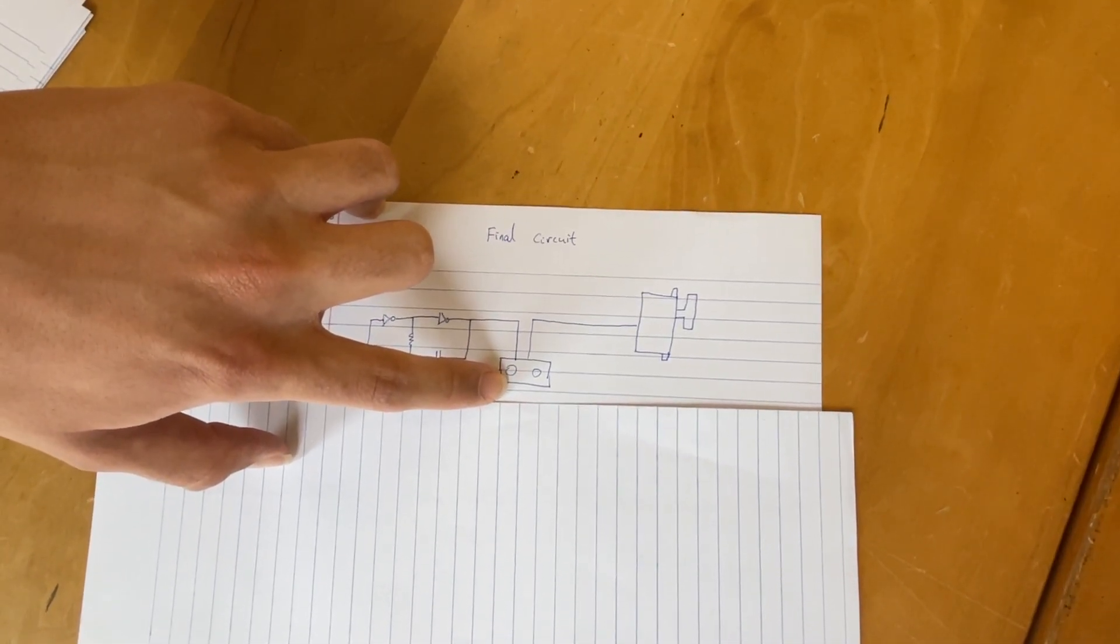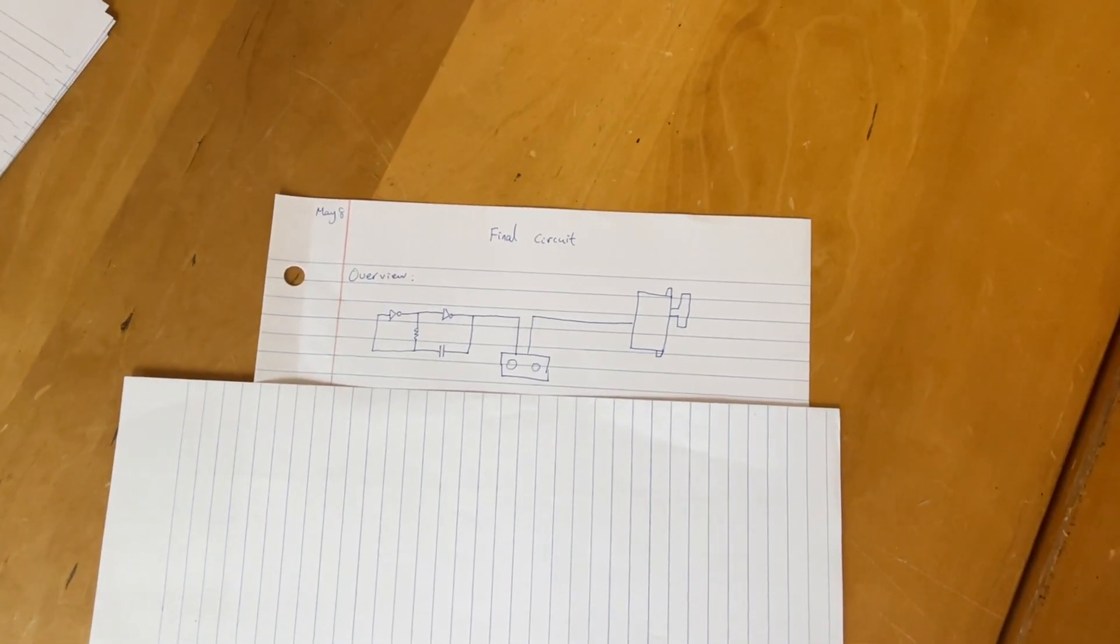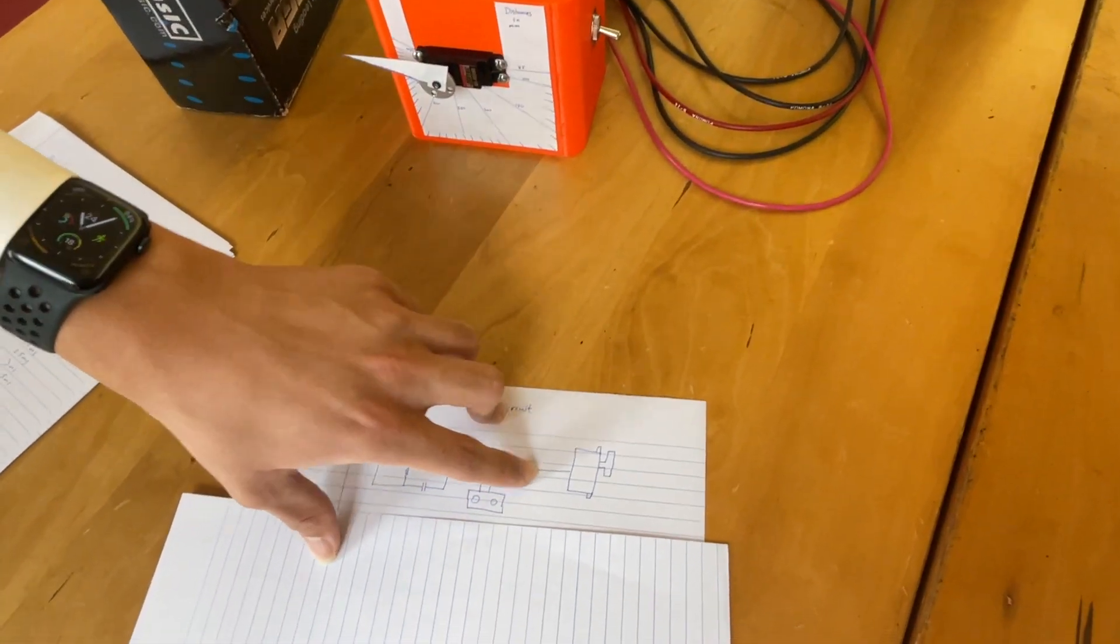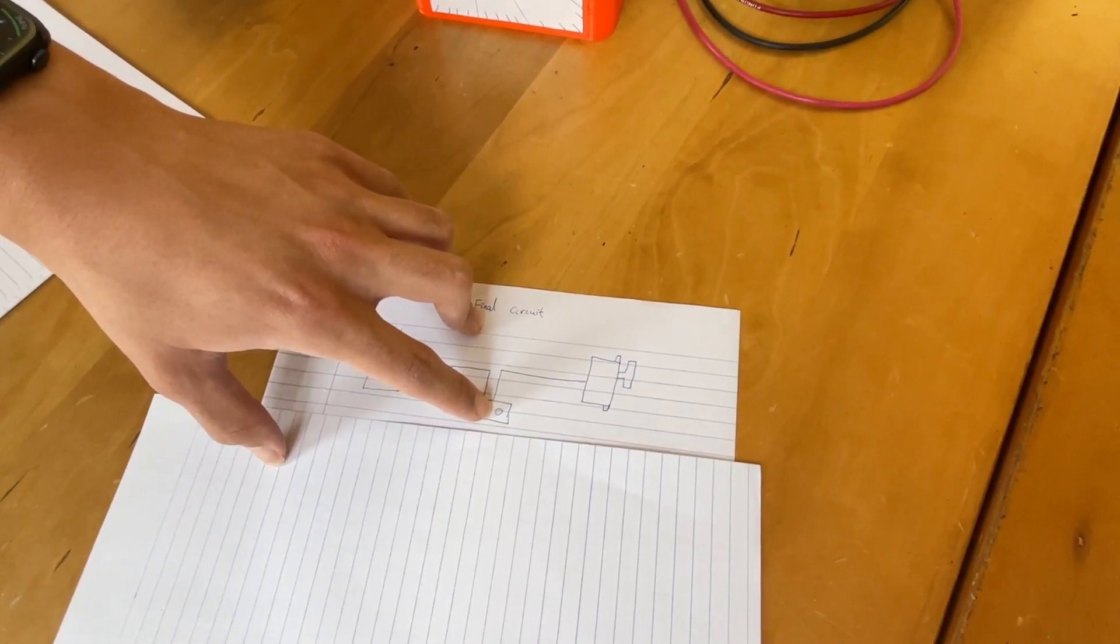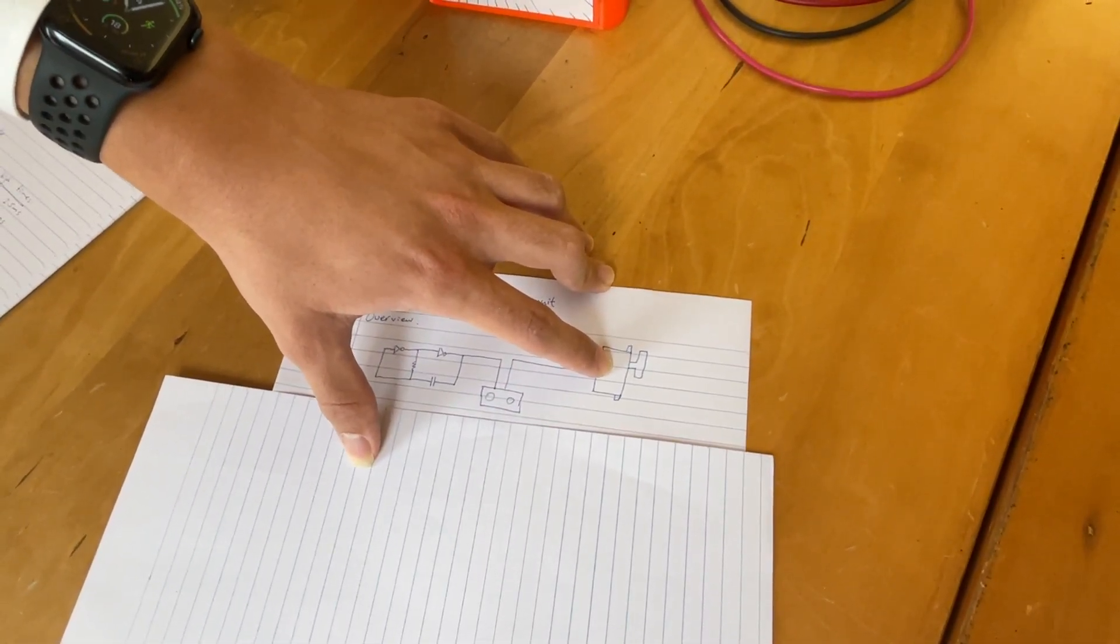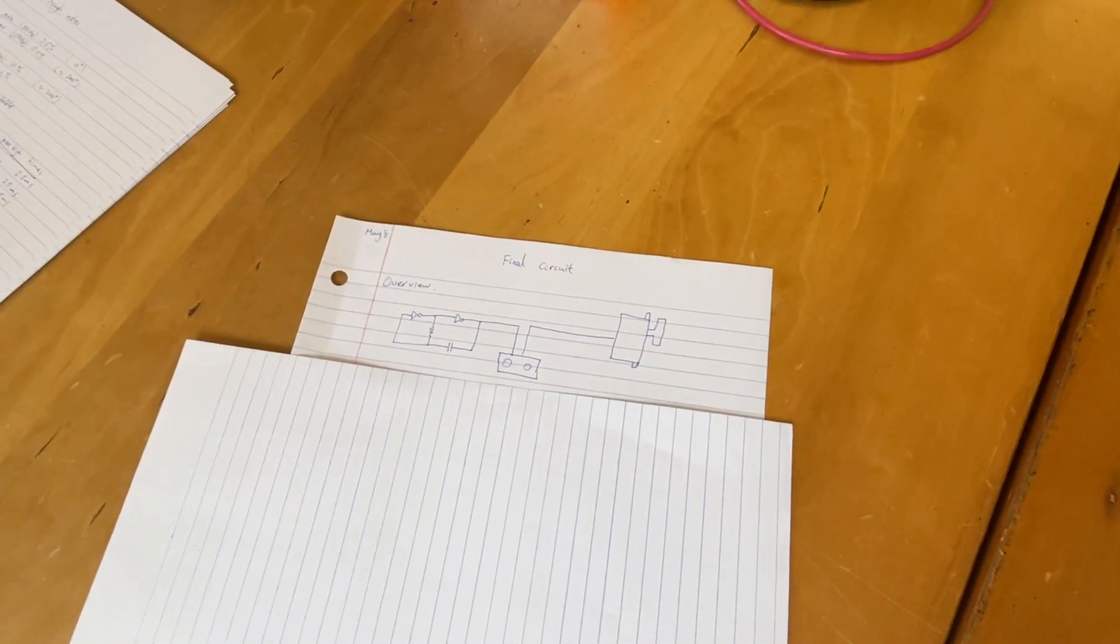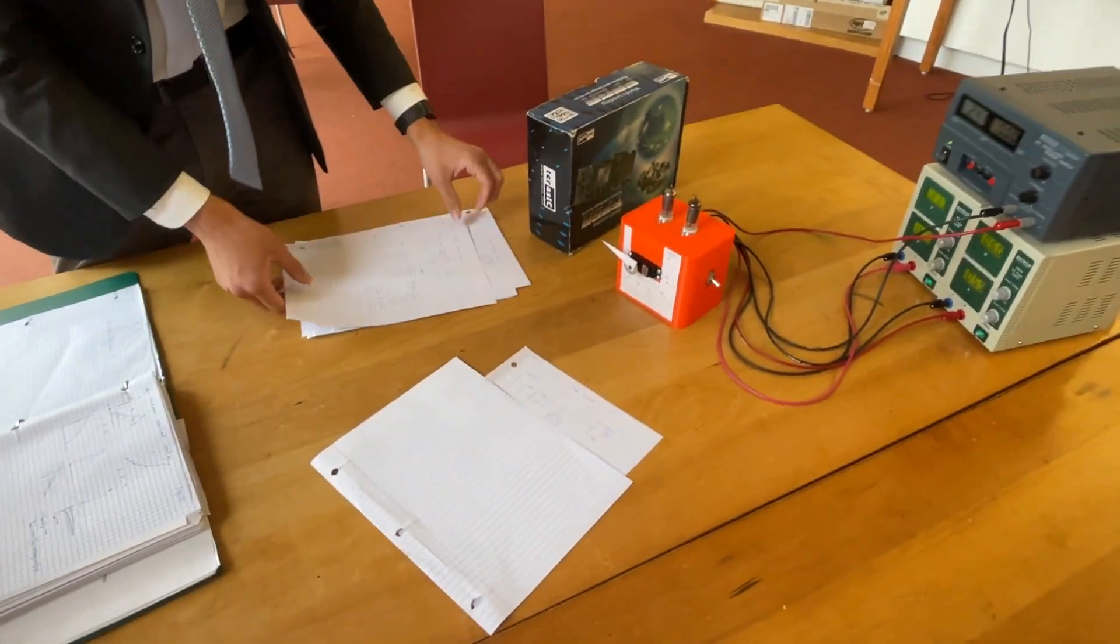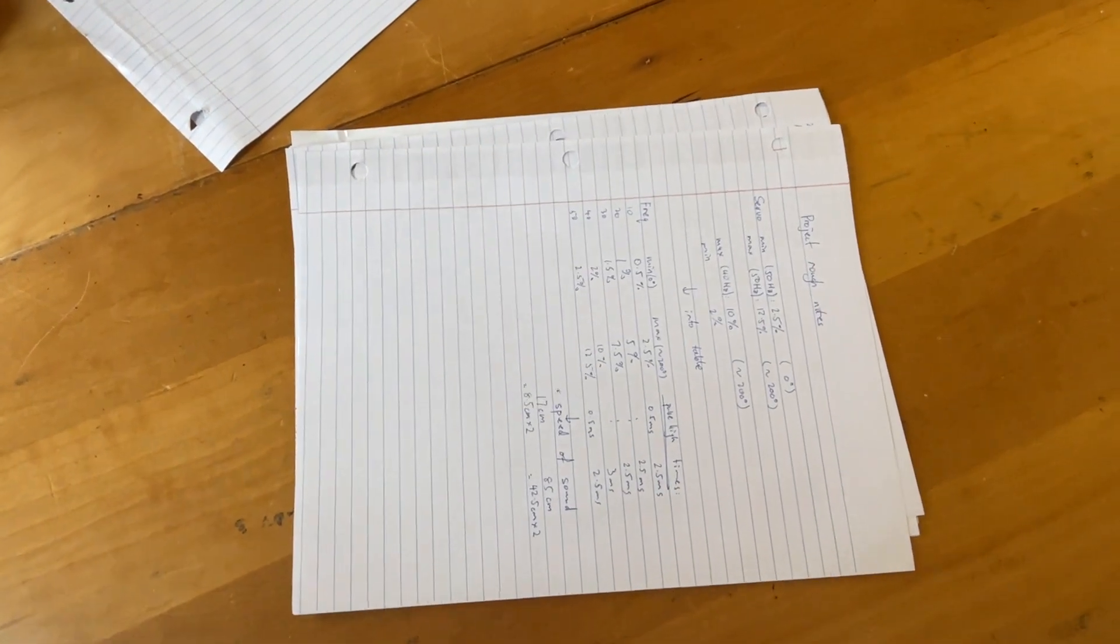And then the ultrasonic sensor outputs a PWM signal which turns out from the experiments and calculations I did can be fed directly into the servo. And the PWM signal outputted here works perfectly with the PWM signal that the servo needs as input. So just directly connecting it works and I have a whole pile of paper that shows the work I did during this whole project.